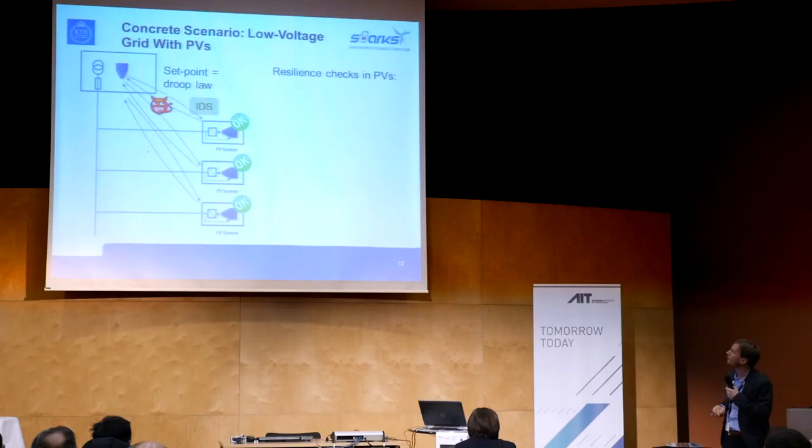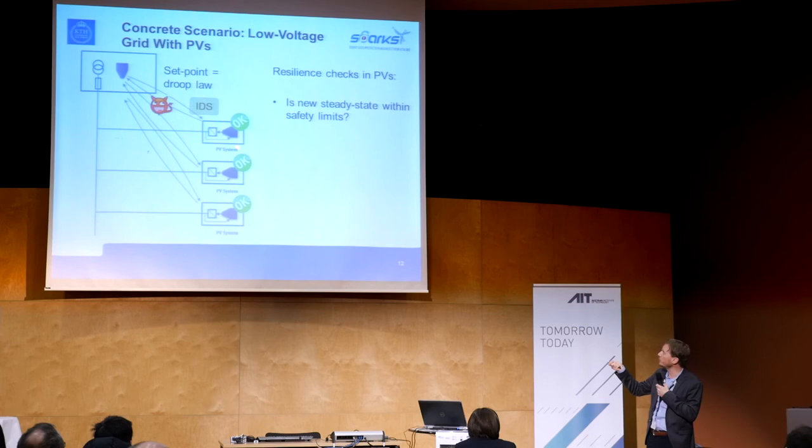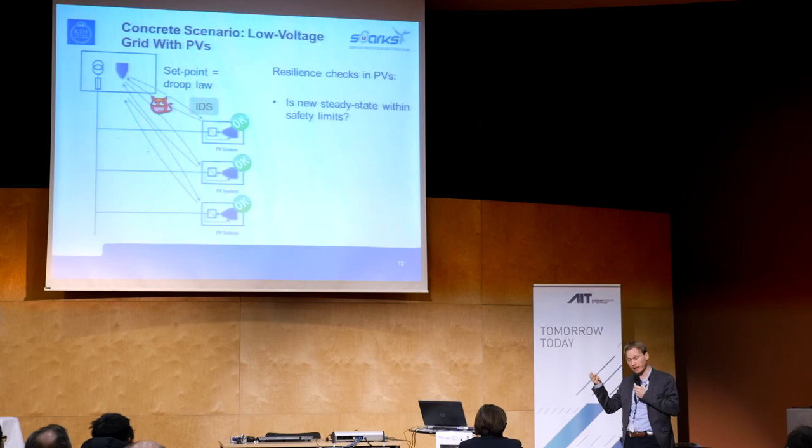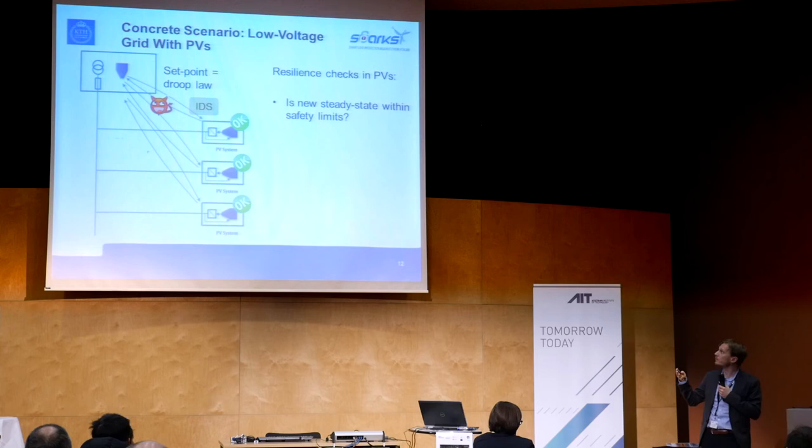What type of checks do we do in the PV system? First, we assume the PV systems have some sort of anti-islanding controller that estimates the grid impedance. Using that impedance, it can predict: if I execute the command I received, what is the new steady-state voltage I should reach? If that predicted voltage is outside acceptable limits, maybe I shouldn't execute this command — or at least I should send a warning. That's the first simple, completely decentralized test you can do locally.